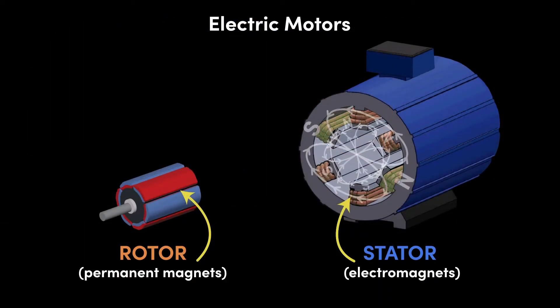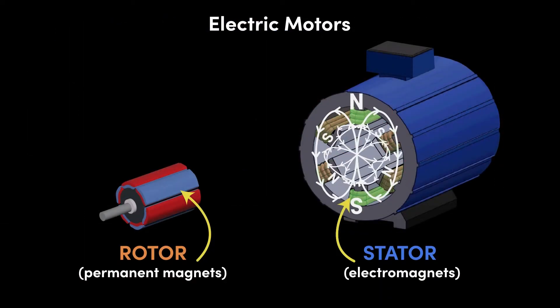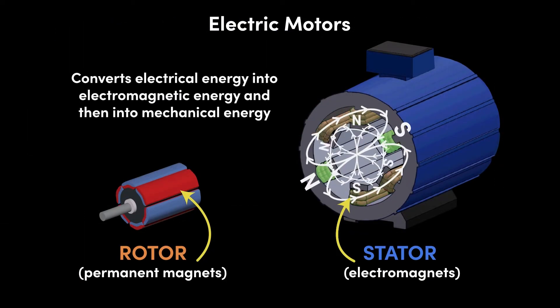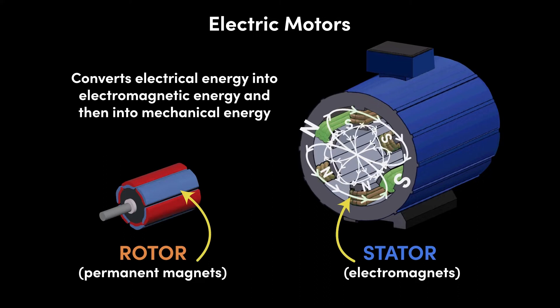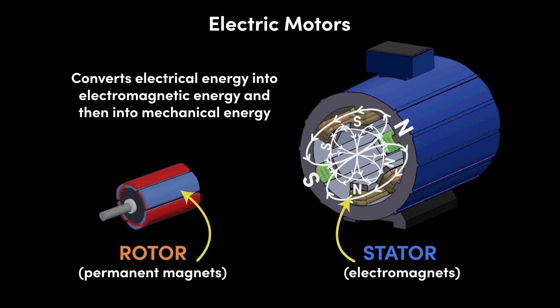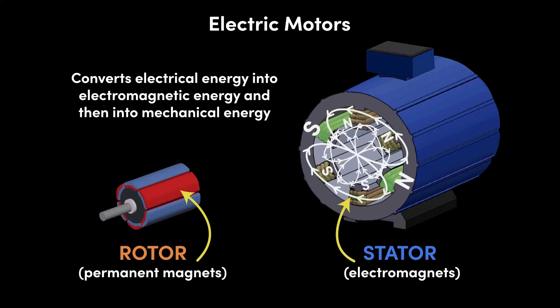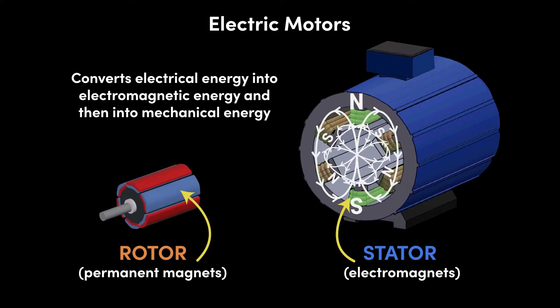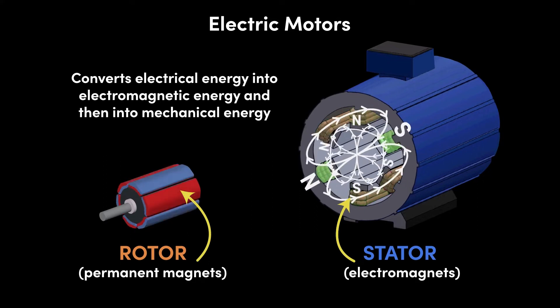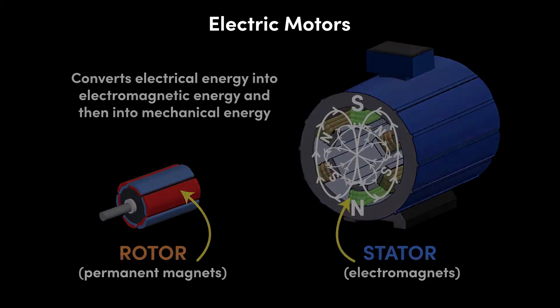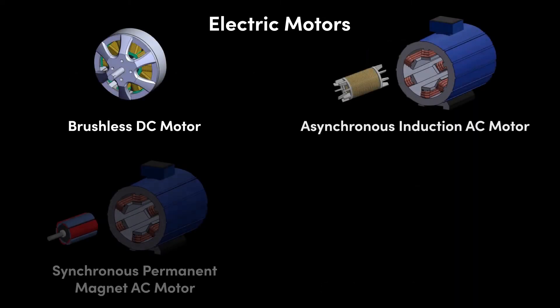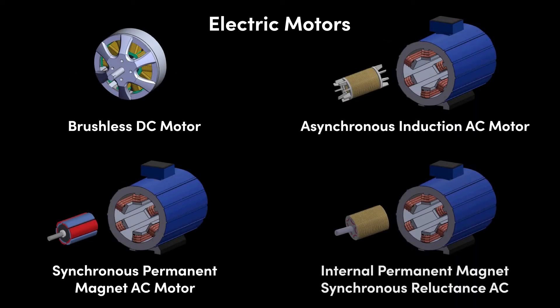An electric motor is a device that converts electrical energy into electromagnetic energy and then into mechanical energy, such as rotation, which can be used to rotate the wheels of a vehicle. Although there are several different types of motors which have different designs, they all use the same fundamental principles of electromagnetism.